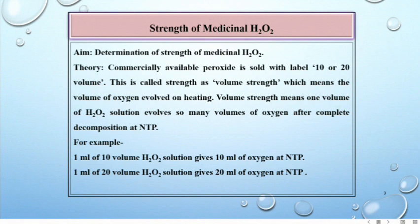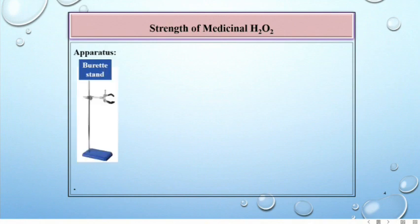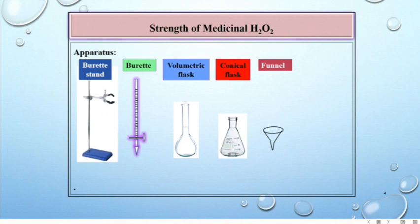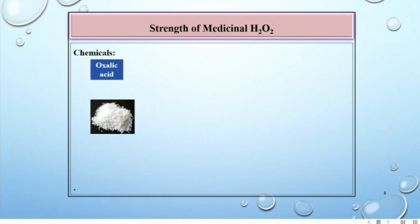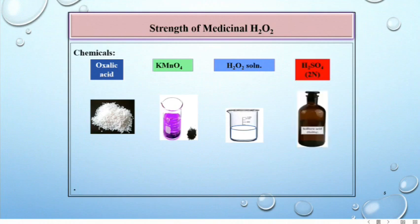Let us see the apparatus required for this experiment: burette stand, burette, volumetric flask, conical flask, funnel, beaker, etc. Chemicals required are oxalic acid, permanganate, H2O2 solution, and H2SO4 two normal.